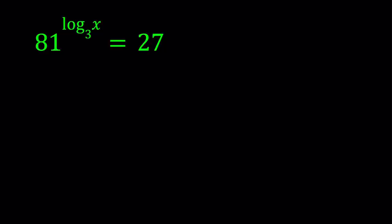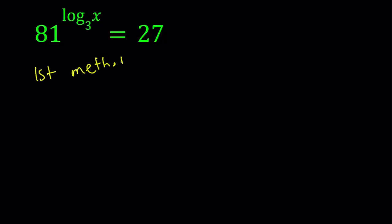So first method. For my first method, I'm going to be using substitution. So let log x with base 3 equal n. And now we have 81 to the power that. So we can basically write it as 81 to the power n equals 27. And this equation, as you know, is fairly easy to solve. We can basically, well, here's the trick. 81 and 27 are both powers of 3.